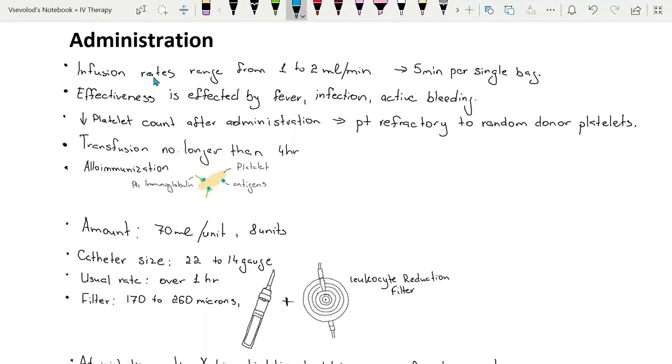Administration. Platelets may be infused rapidly as the patient tolerates, with infusion rates ranging from 1 to 2 milliliters a minute for up to 5 milliliters for a single donor bag.